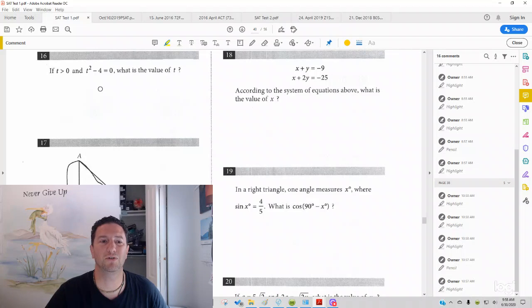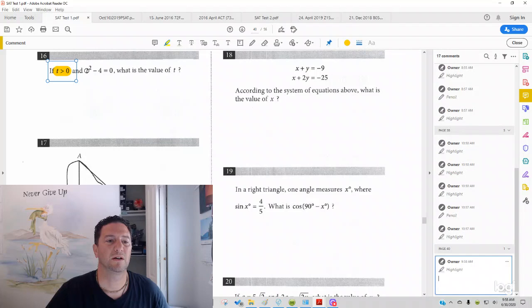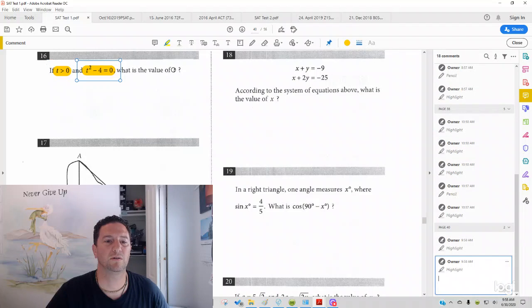On that note, we're doing section three, number 16 of test one, which reads: if t is greater than zero and t² - 4 = 0, what's the value of t?